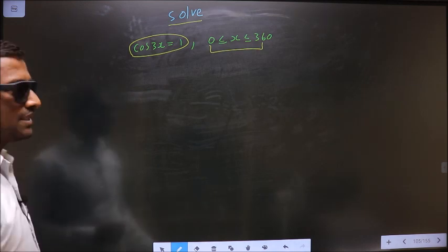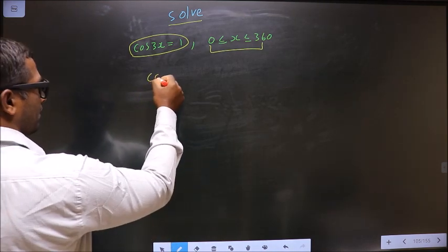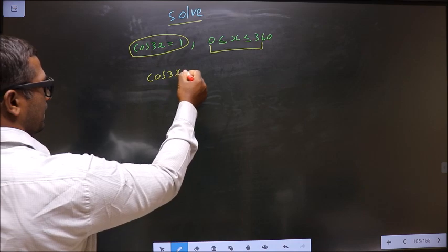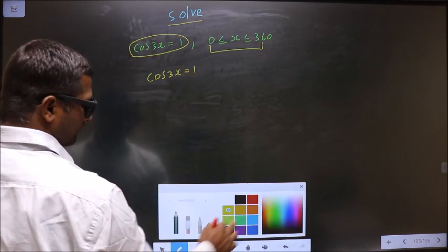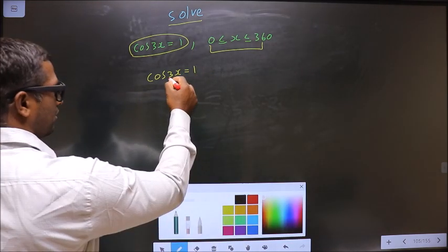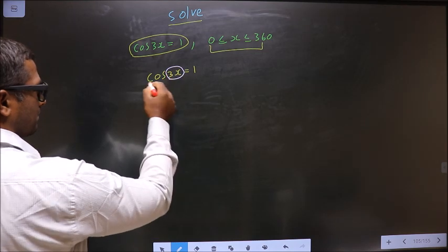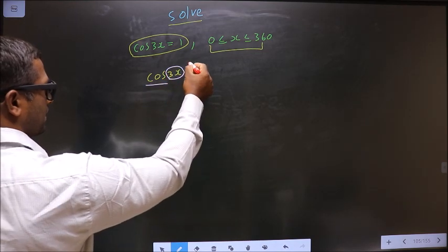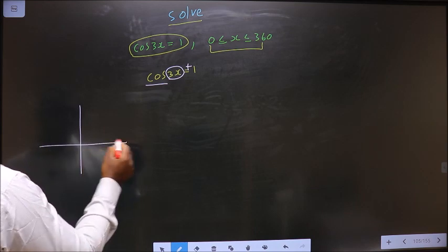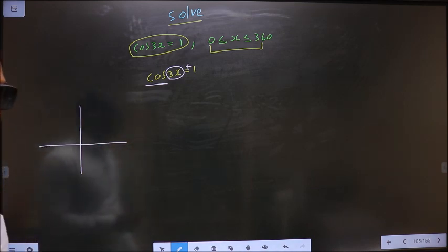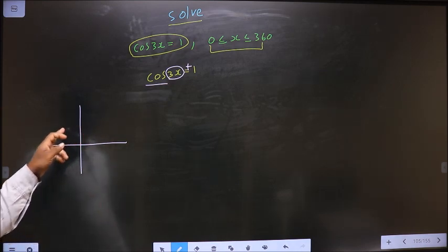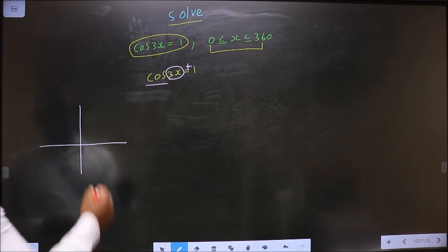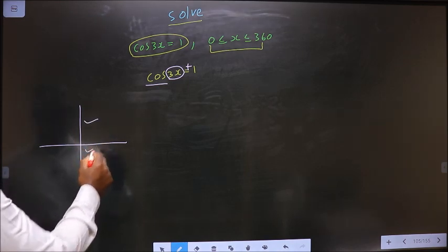First the given equation is cos 3x equal to 1. Here to get the values for 3x, here you have cos and here it is positive. So now you check in what all quadrants is cos positive. It is all silver tea cups. Cos is positive in the first and in the fourth.